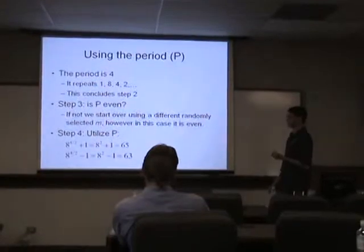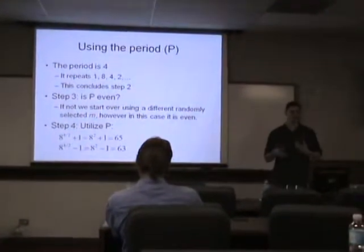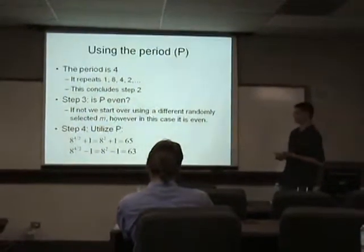Step 3 of the algorithm is P even. It's a pretty simple check. If it's not, then we start over and pick a different random value for N.